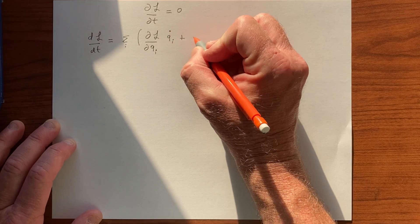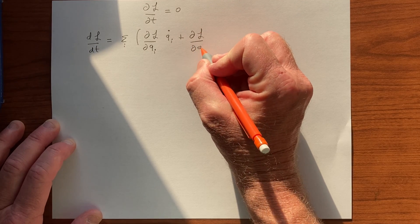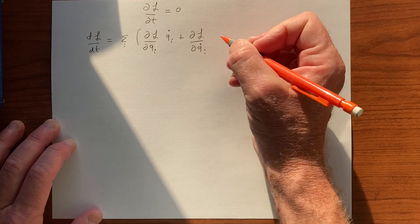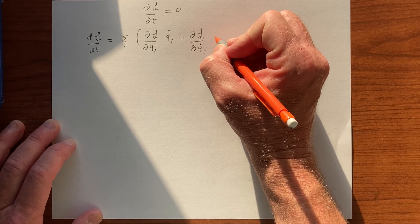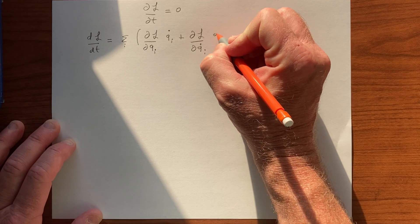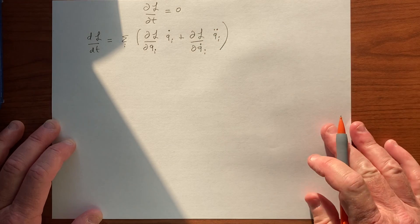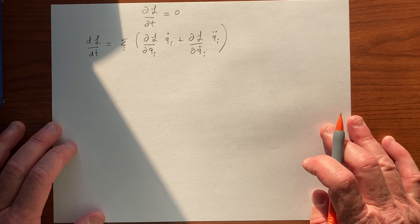Plus we have that the Lagrangian depends on Q dot, and however many there are, we have terms like this: DL by DQ dot times Q double dot, and we sum on all of the terms that we have.